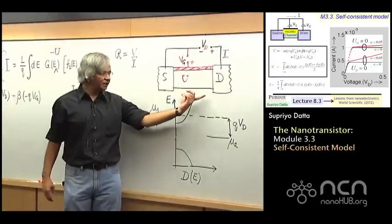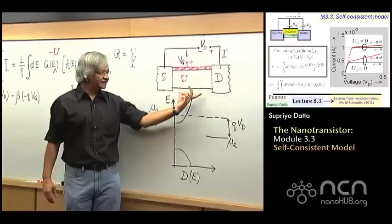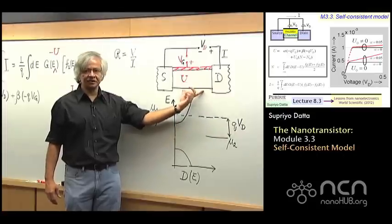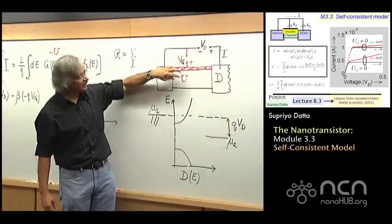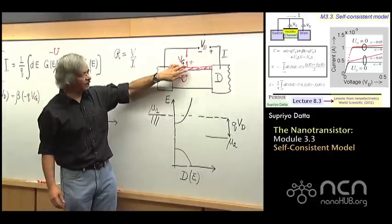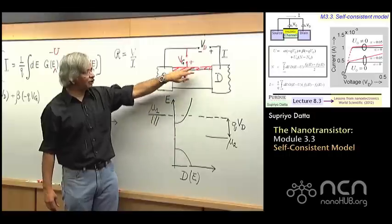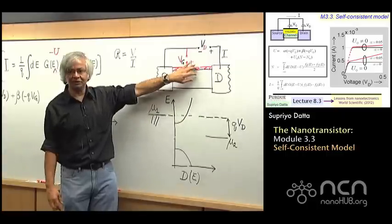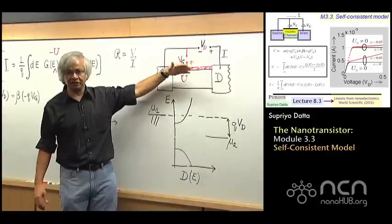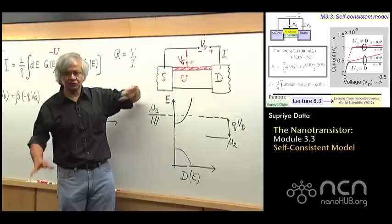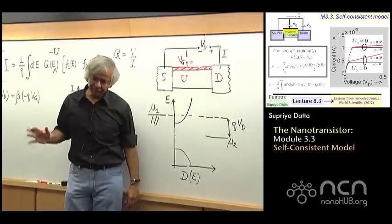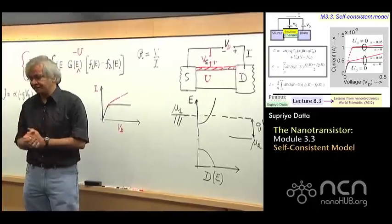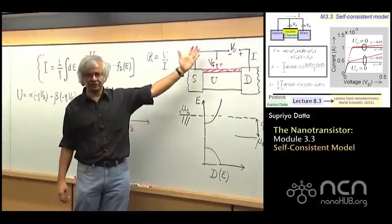People who work on nanotransistors will tell you that really is the biggest challenge. As transistors have gotten smaller, this length is now like hundreds of atoms long. But if this is hundreds of atoms and you want the potential to be controlled by the gate, then the insulator has to be even thinner, usually like tens of atoms. The real challenge is how to make these insulators that are tens of atoms thick across an entire wafer of billions of transistors.